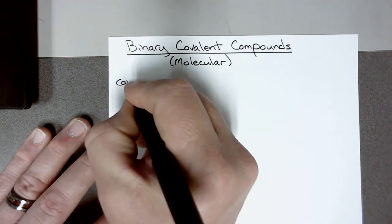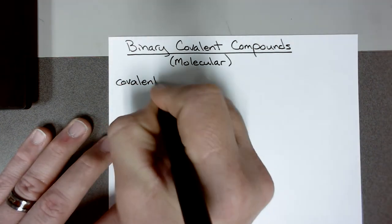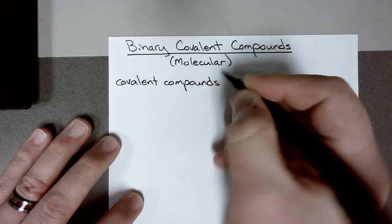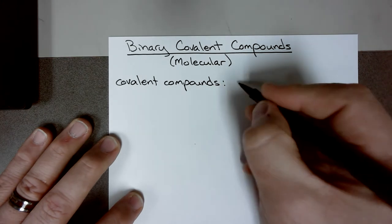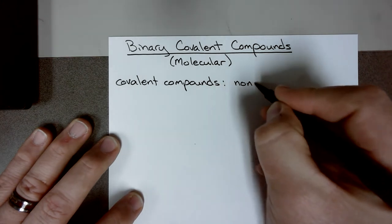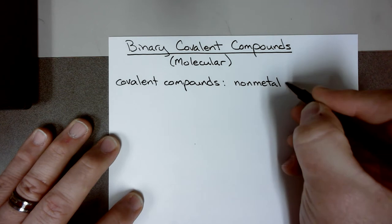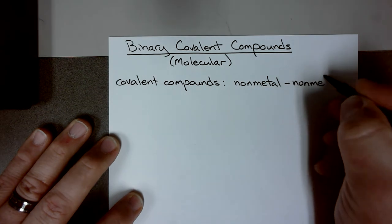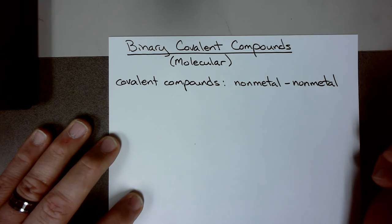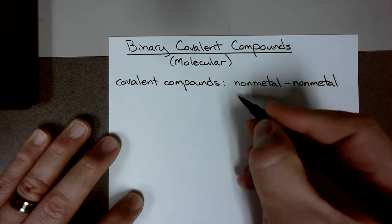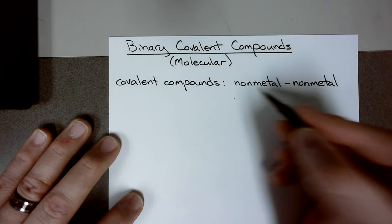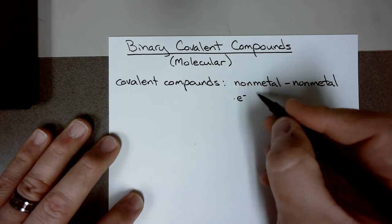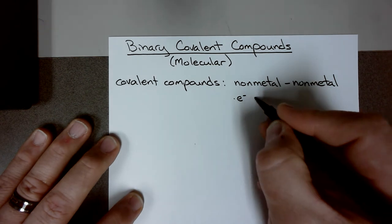Covalent compounds do not involve charges. There is a nonmetal bonded to a nonmetal. So it's nonmetal to nonmetal. That's the first thing you look for. If it's nonmetal to nonmetal, you know it's covalent or molecular. The electrons are actually sharing between the two atoms. So electrons are shared.